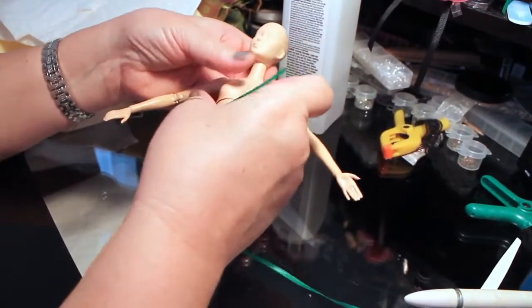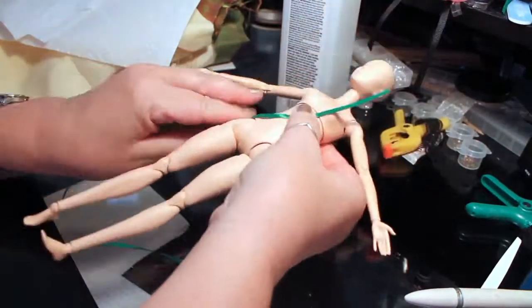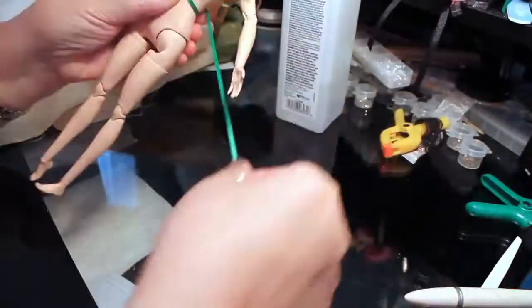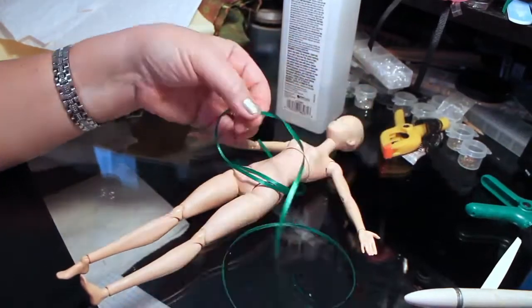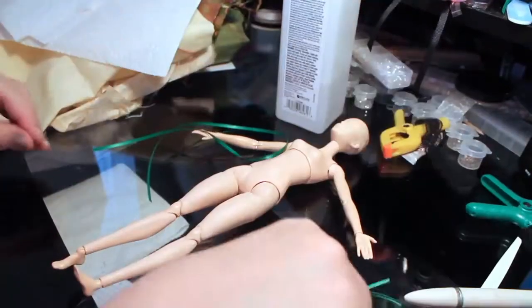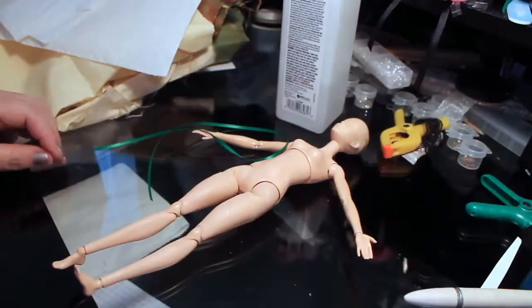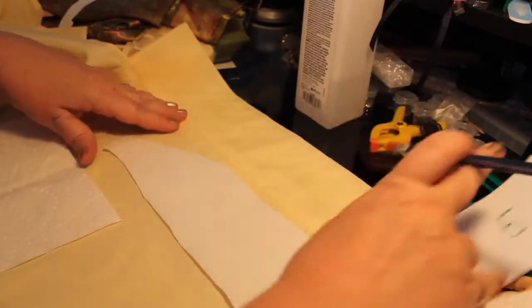Now I'm measuring how long the obi needs to be. It wraps around the body twice and then folds back and forth twice to make the bow. I just want to get the length, and then it's just going to be a straight piece of material.